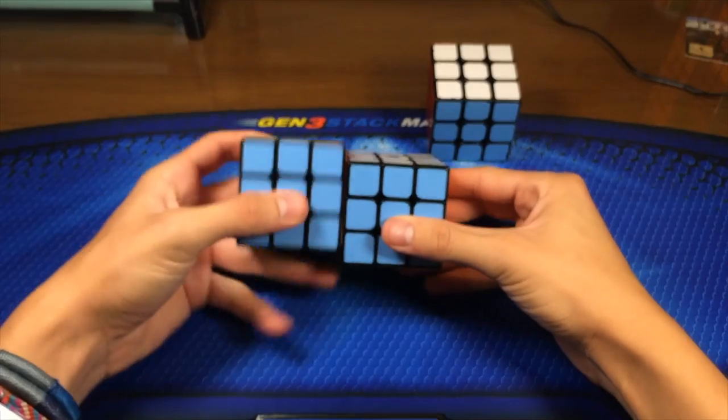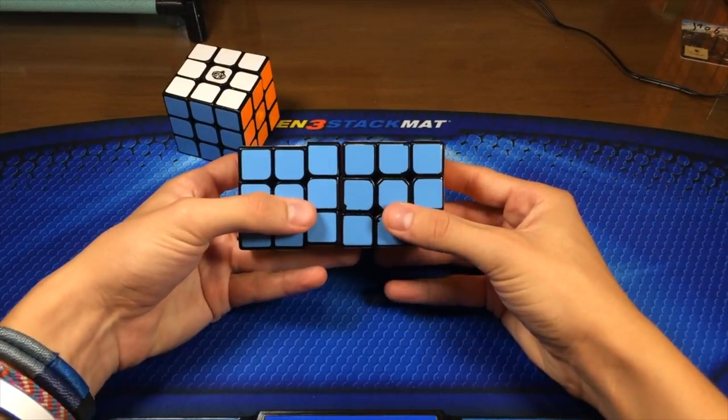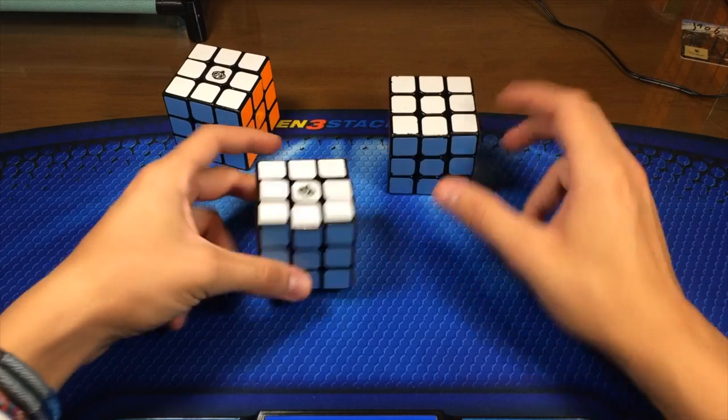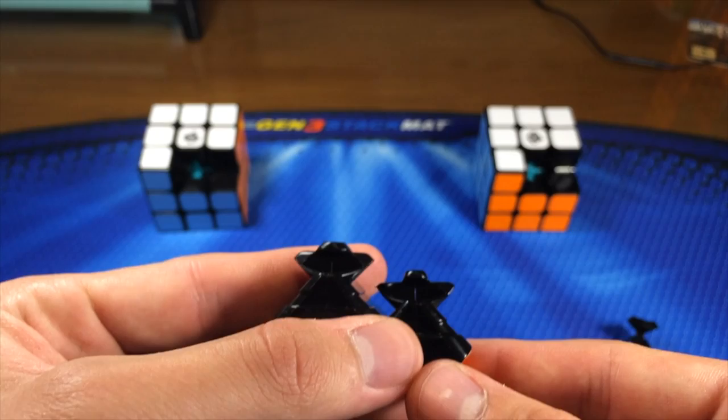Size-wise, it is the same size as the Yu Yang. It's 56mm here as compared to my Hualong, which is 57. It's slightly smaller, and you can actually feel it as with any 56mm cube.